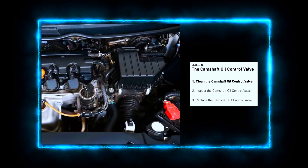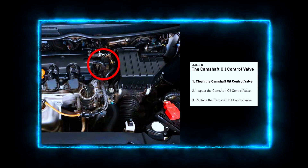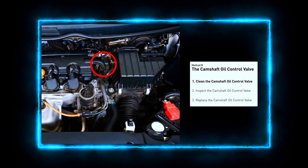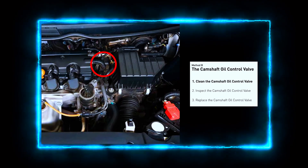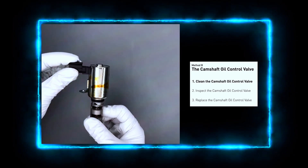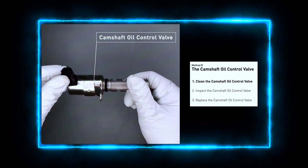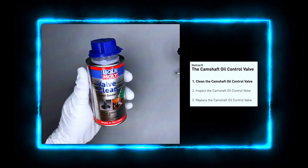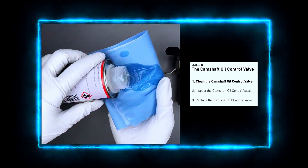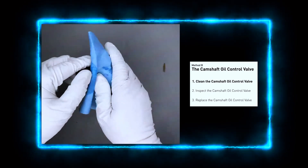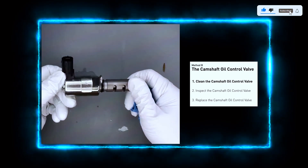Next, locate the camshaft oil control valve. Depending on your vehicle, it's usually mounted on the cylinder head near the camshaft — you'll typically find it bolted to the engine block with an electrical connector attached. Clean the oil control valve using brake cleaner or electrical contact cleaner spray, thoroughly removing any dirt or sludge buildup. Be sure to clean the valve's filter and any passages, then wipe it down with a clean cloth and let it air dry for a few minutes.